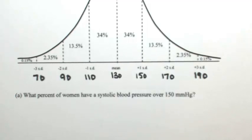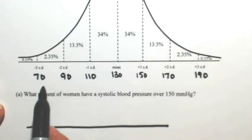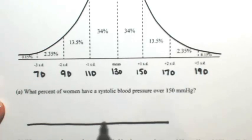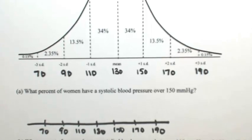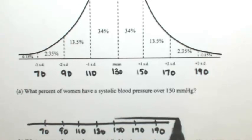So in part A, we're looking for what percent of women have a systolic blood pressure that's over 150. So let me redraw this line. Let me just put those numbers on there again with my mean at 130. So we have 70, 90, 110, 150, 170, 190. So we're looking for a blood pressure that's over 150, so we're looking to the right of 150.